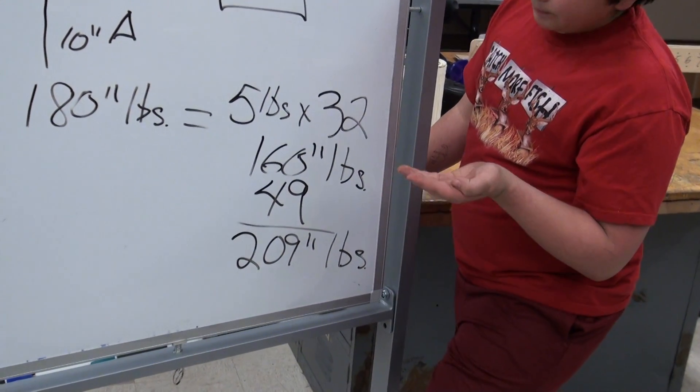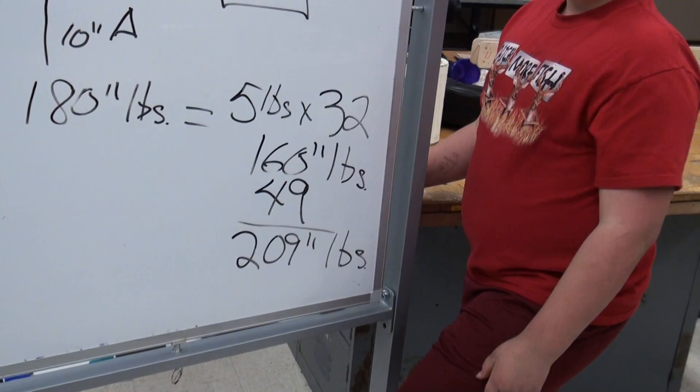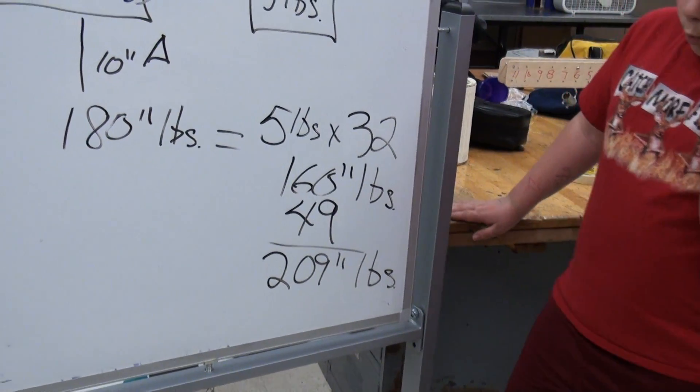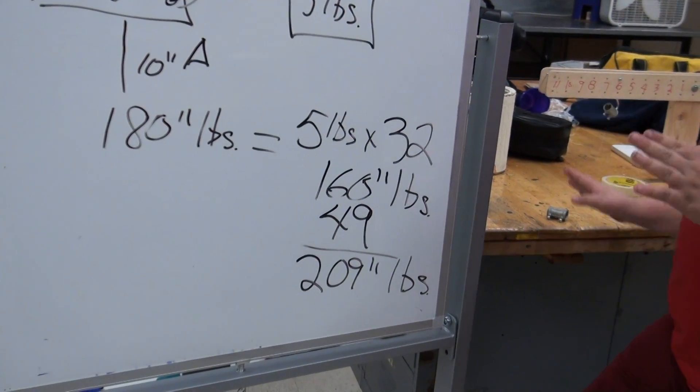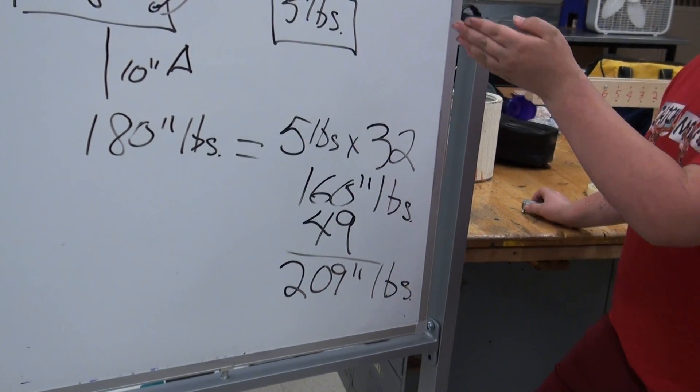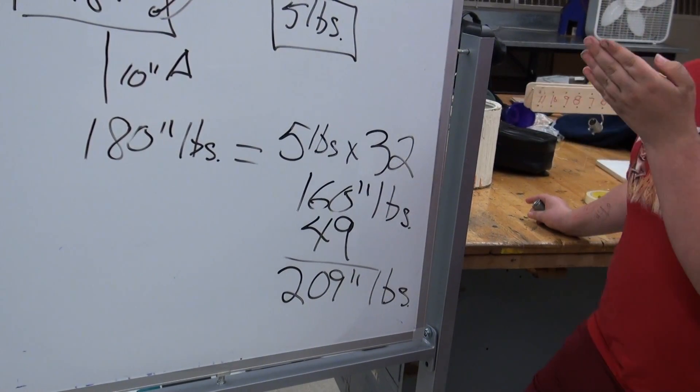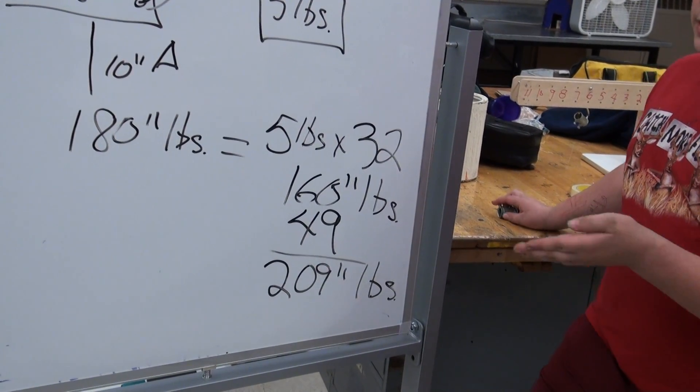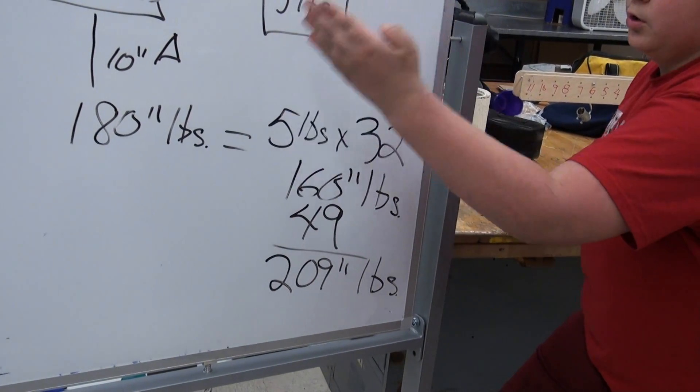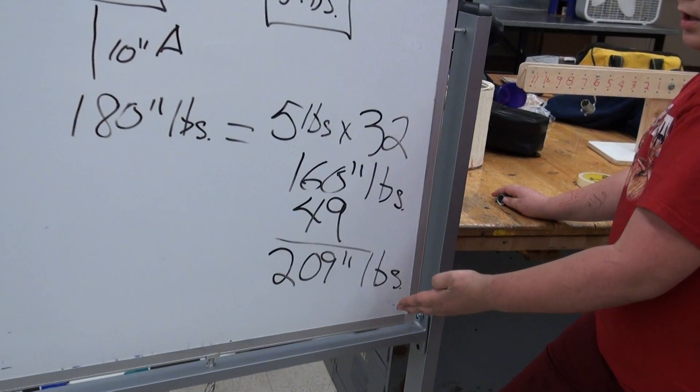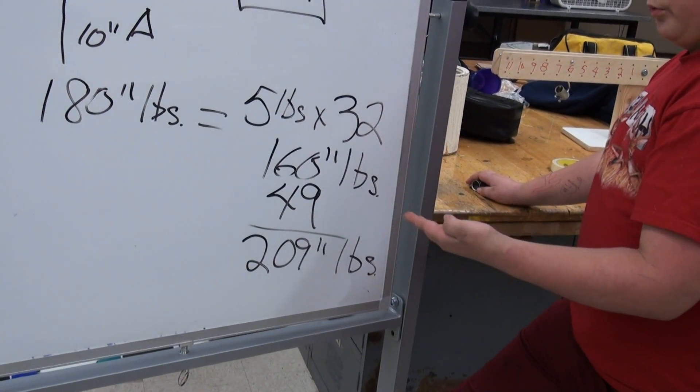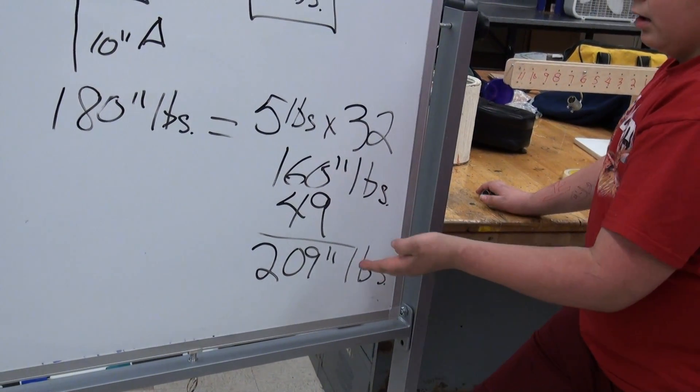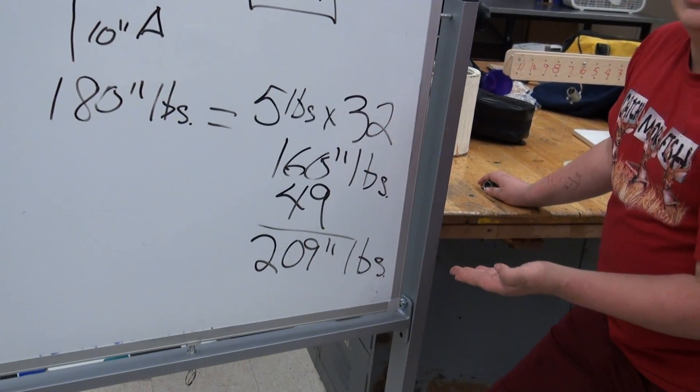Then we got 209 inch pounds from all that. So what would happen in this equation is the crane would tip over, because the crane is only 180 inch pounds and the weight of the other side is 209 inch pounds.